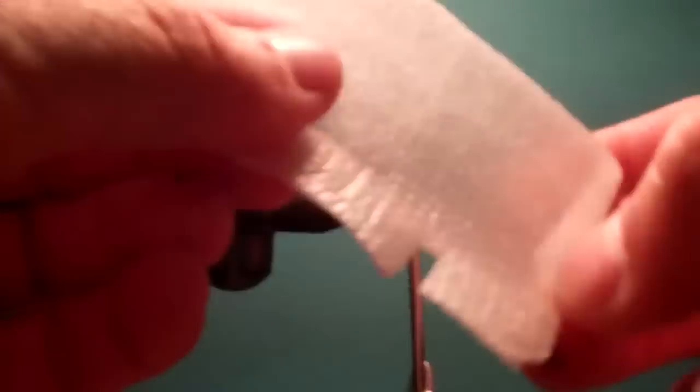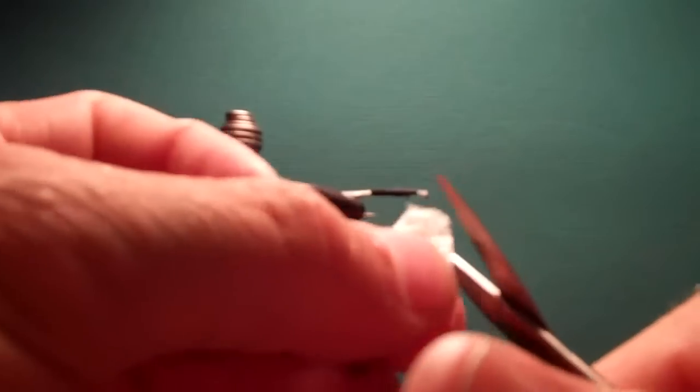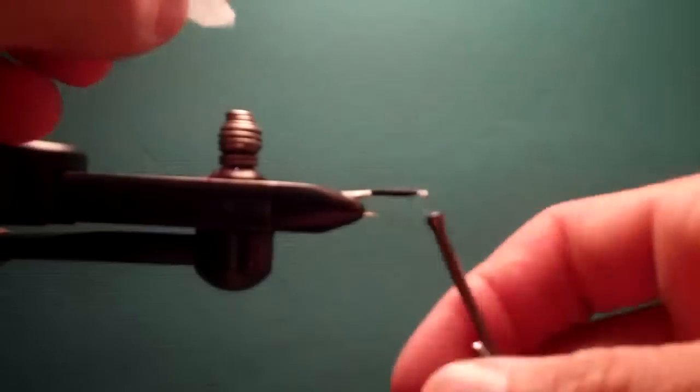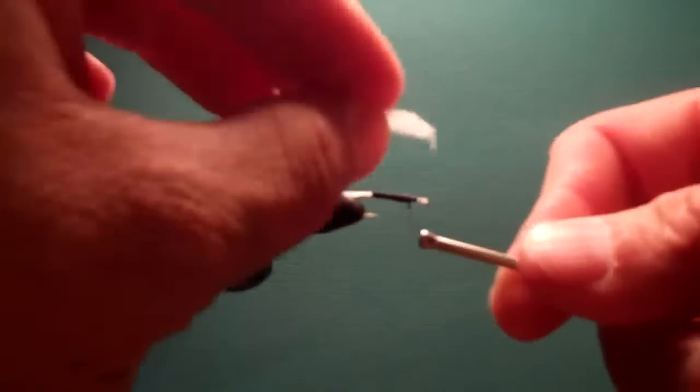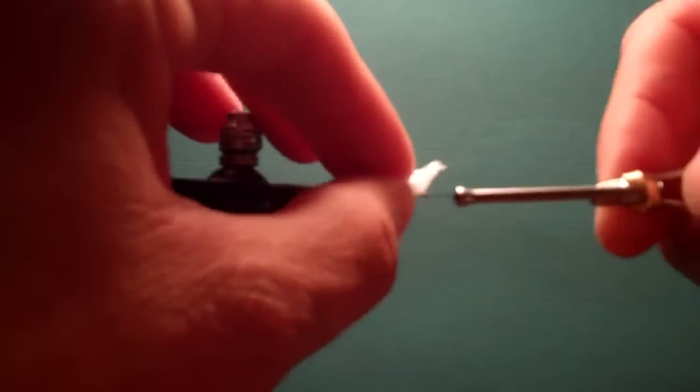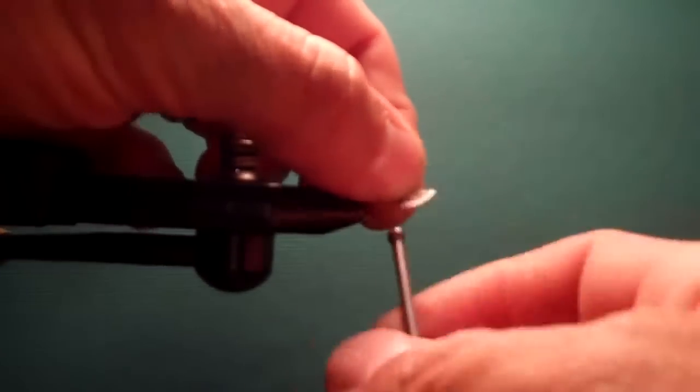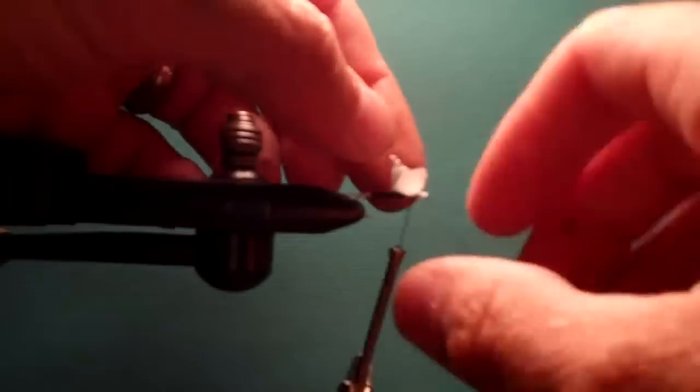You take your foam and just cut off a little strip. And you can cut it to shape. You sort of want it to look like a bow tie. Take that, and you're going to tie this in like you would a pair of dumbbell eyes, criss-cross. One, two, three. One, two, three.